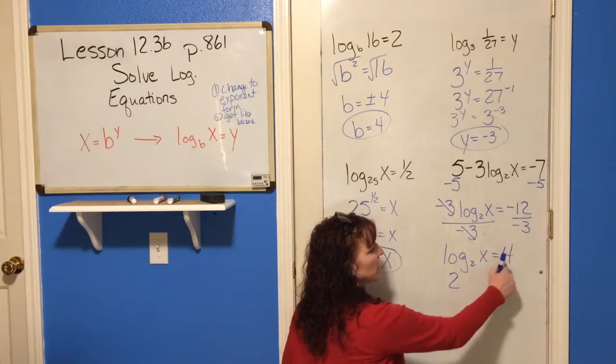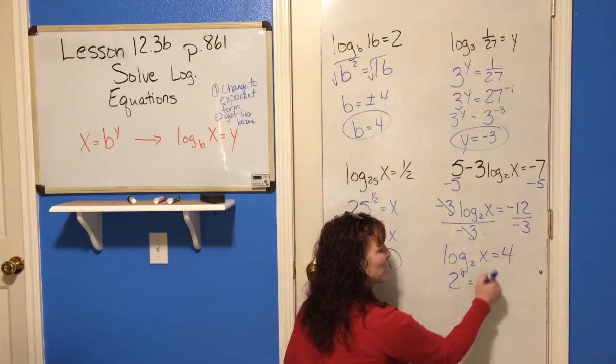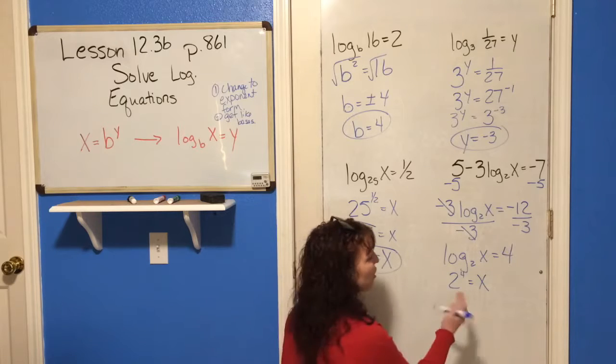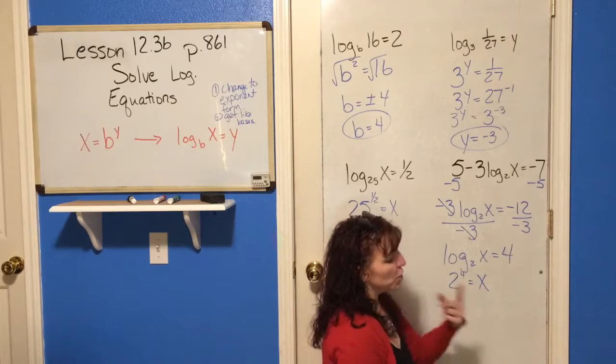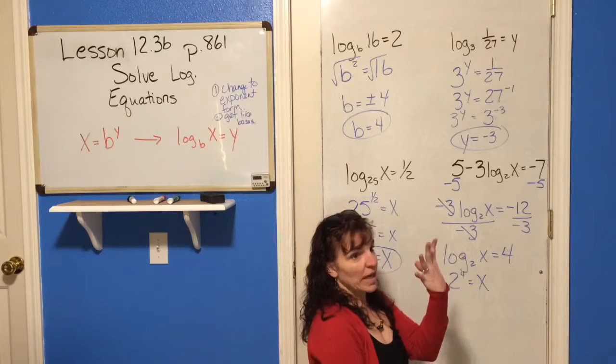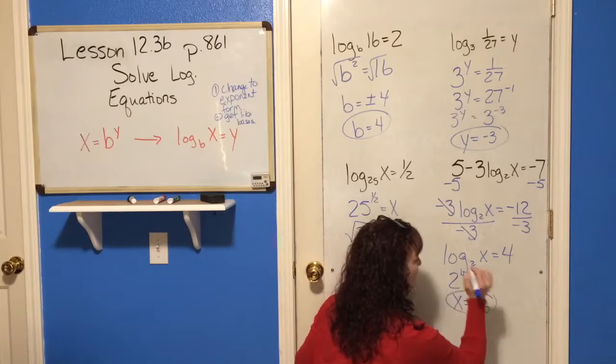Now, you can simply put it into the form that you know. 2 is your base. 4 is the exponent. Remember, the answer to a log is the exponent. And that's going to equal what you're taking the log of. So, now you just need to figure 2 to the 4th power. 2 times 2 is 4. 4 times 2 is 8. 8 times 2 is 16. So, x equals 16. And you're finished.